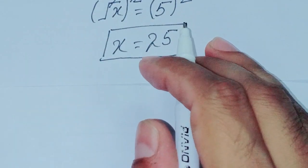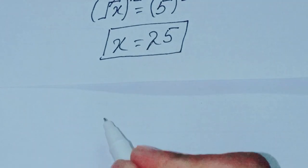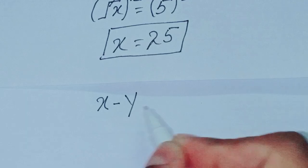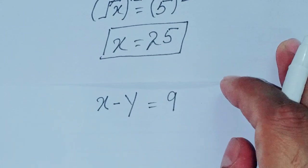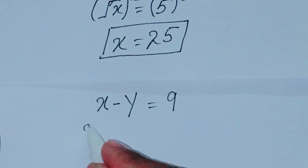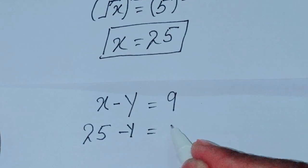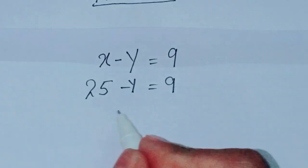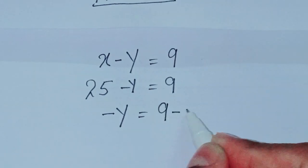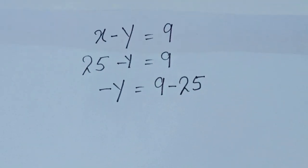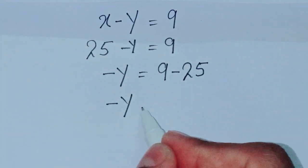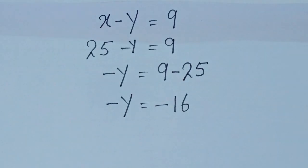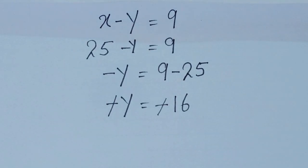Now we substitute x equals 25 into equation 2: x minus y equals 9. So 25 minus y equals 9. Shifting 25 to the right side: minus y equals 9 minus 25, which is minus 16. The negatives cancel, so y is equal to 16.